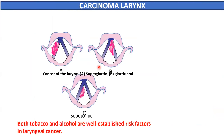Carcinomas can also occur in the larynx and may be supraglottic, glottic, or subglottic. Glottic carcinomas — carcinoma of the vocal cords — are more common and more easily diagnosed as changes in the voice occur early. Laryngeal carcinomas are more common in males, with tobacco and alcohol as the main risk factors.